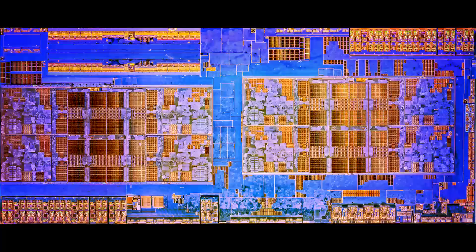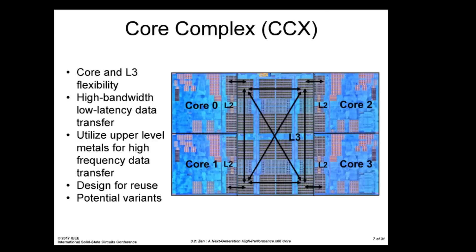Before we talk about the potential performance problems of this design, we have to understand why renowned engineers like Jim Keller and Mike Clark went with it. They could have designed one monolithic compute complex of 8 cores with double the L3 cache. Doing so, however, would require a much more complex interconnect to transfer data between the L2, L3, and Zen cores. It's an exponential problem: the more cache-to-core associations you need, the more complex and power-hungry the transfer subsystem will be.